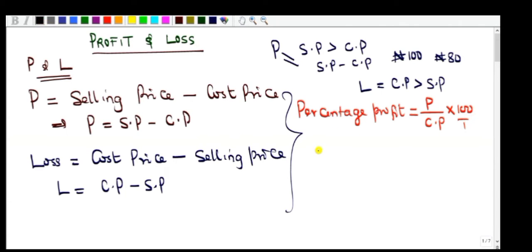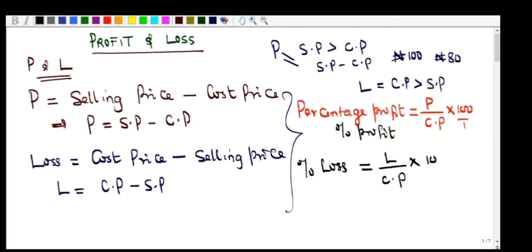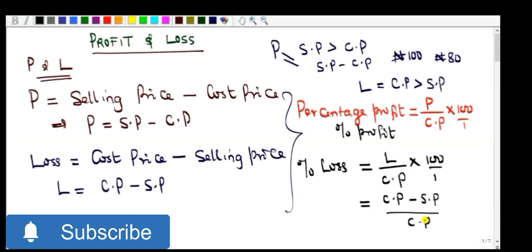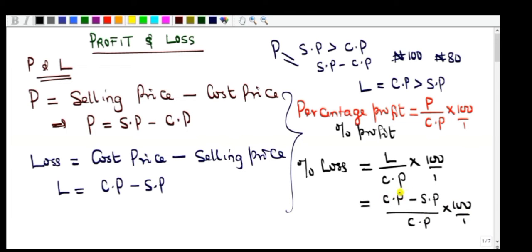Percentage loss = (Loss / CP) × 100. We can also write percentage loss as (CP − SP) / CP × 100, since CP − SP represents the loss. Similarly, SP − CP can replace the profit in the percentage profit formula.